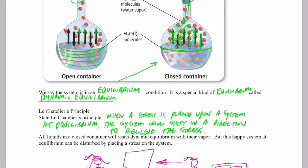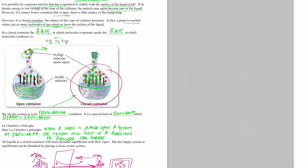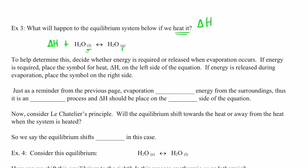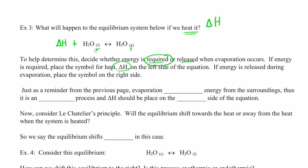Now let's illustrate Le Chatelier's Principle with our container of liquid at equilibrium. We have water in the liquid phase converting to water in the gas phase. What will happen to this equilibrium if we heat it? We use the symbol ΔH to represent heat. So ΔH literally means change in heat. To determine how heating affects equilibrium, we decide whether energy is required or released. Evaporation requires energy — it's endothermic — so we place ΔH on the left (reactant) side.